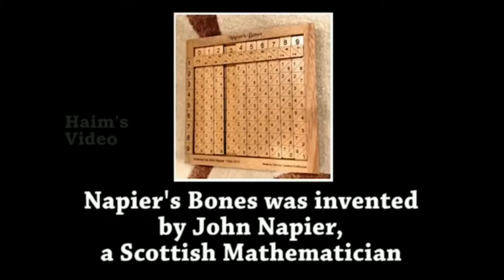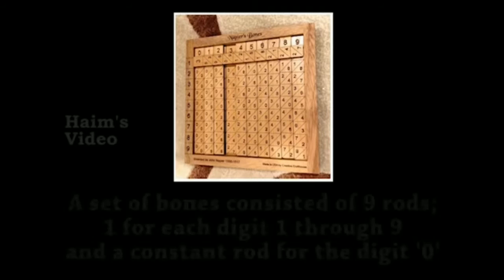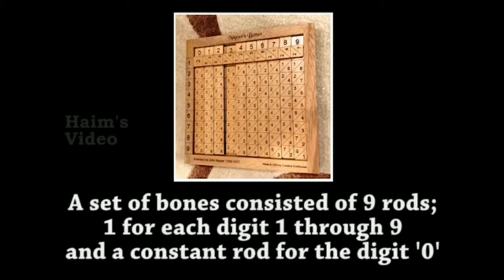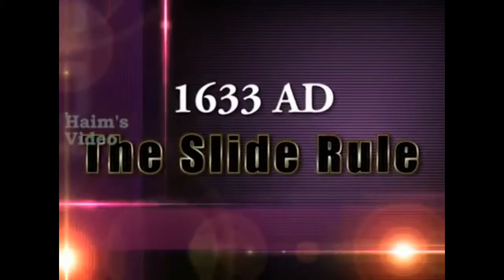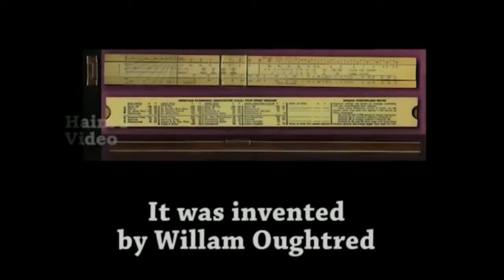1614 AD — Napier's Bones. Napier's Bones was invented by John Napier, a Scottish mathematician. A set of bones consisted of nine rods, one for each digit one through nine, and a constant rod for the digit zero.